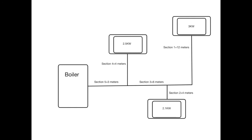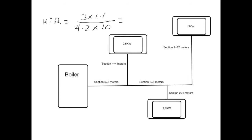Starting with finding the flow rate through section 1: beginning with 3 kilowatts, the mass flow rate would be 3 kilowatts, but then we have to add 10% to compensate for pipe heat losses. So multiplied by 1.1, divided by the specific heat capacity of water multiplied by our differential temperature of 10°C. Working that out, the mass flow rate through section 1 equals 0.08 kilograms per second.